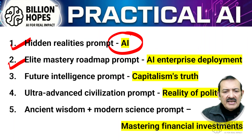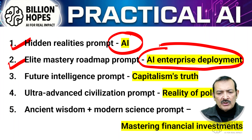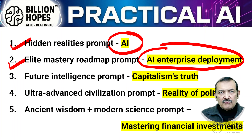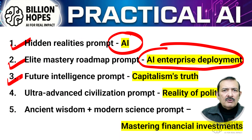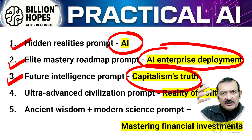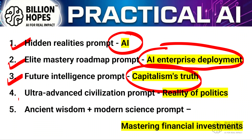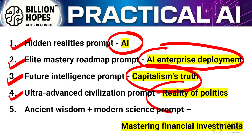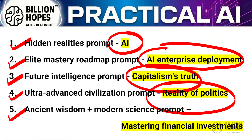The second prompt is the elite mastery roadmap prompt. Suppose you are starting your journey on AI enterprise deployment and you want to become an absolute elite master of that art — can an LLM generate a proper roadmap? This would be different from a normal roadmap. Third is the future intelligence prompt — projecting yourself as an intelligence from the future looking back. Fourth is the ultra advanced civilization prompt, looking at the reality of politics from a different vantage point. Fifth is an ancient wisdom and modern science prompt, to master financial investments using ancient wisdom and modern science.